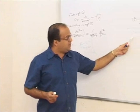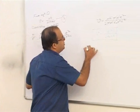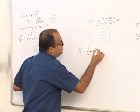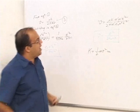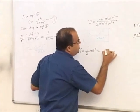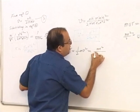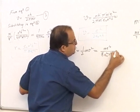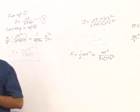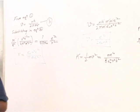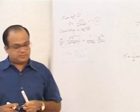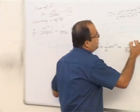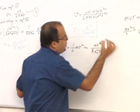Once we know velocity, we can get kinetic energy. Kinetic energy = ½mv². Substituting v into this gives kinetic energy = me⁴/8ε₀²n²h². Try to memorize the equations for velocity, radius, and kinetic energy: KE = me⁴/8ε₀²n²h².